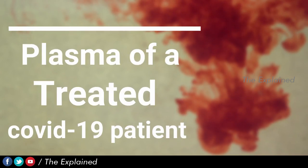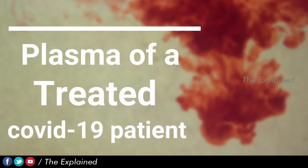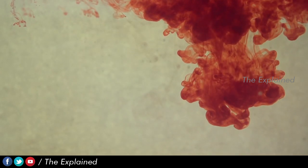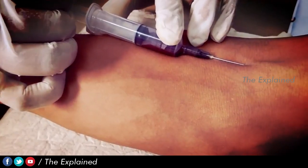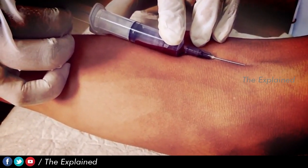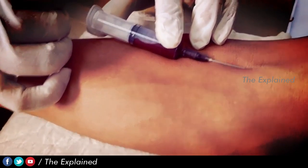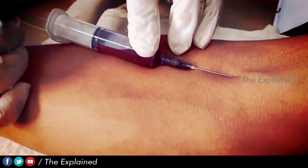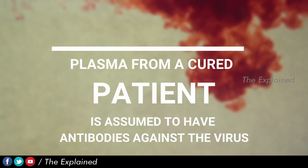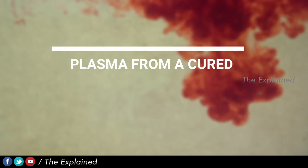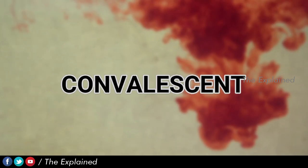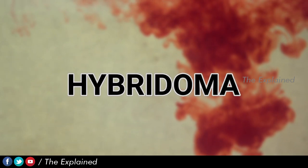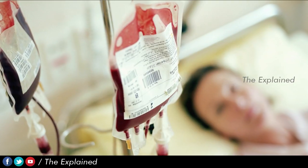The relationship between blood and plasma is important in plasma therapy. In plasma therapy, there are two types: one is the Convalescent method and the other is the Hybridoma method.